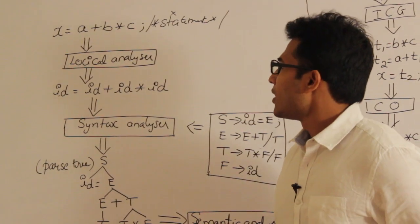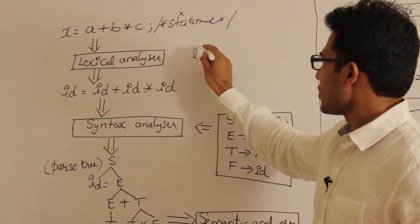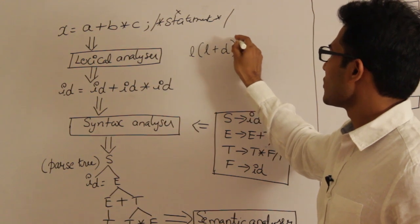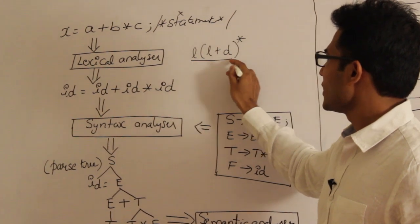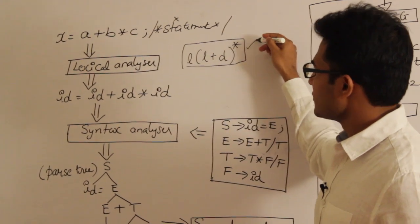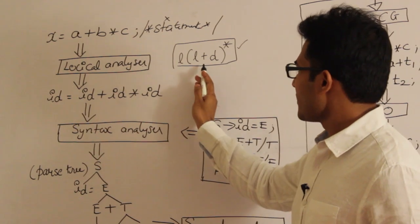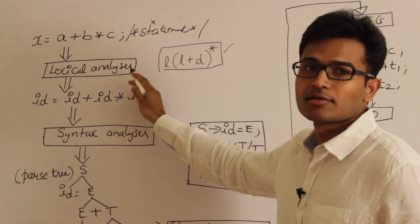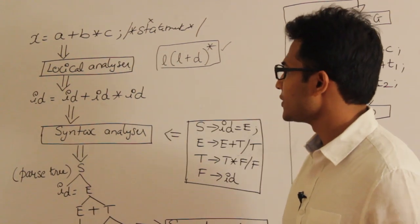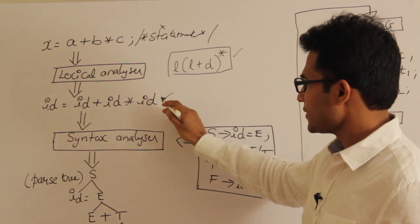How does the lexical analyzer identify that these are identifiers and these are tokens? It uses regular expressions called patterns. For example, an identifier can be a letter followed by letters or digits, any number of them. This is called the pattern. If anything matches this pattern, it will be automatically identified as an identifier. The pattern will be known to the lexical analyzer beforehand, which means you have to give it before you start everything.